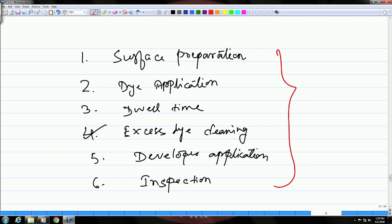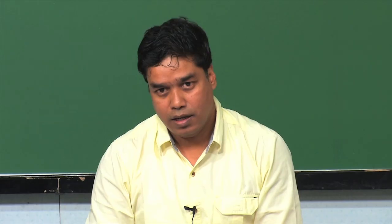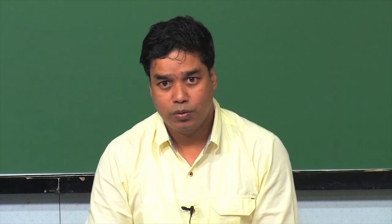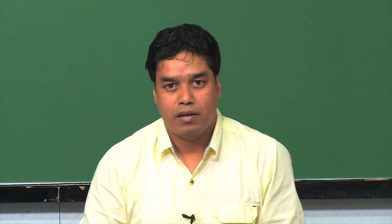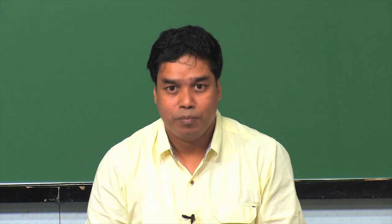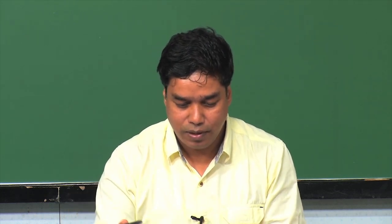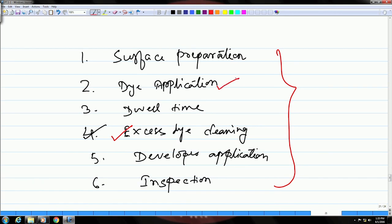Basically, for dye penetrant testing you have 6 different steps to follow, beginning from surface preparation all the way to inspection which is the final step. As a process, you would have realized by now that it is a combination of primarily these two things — the dye and the developer.